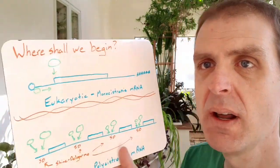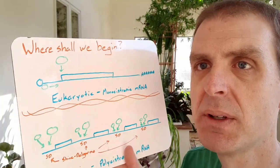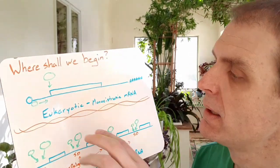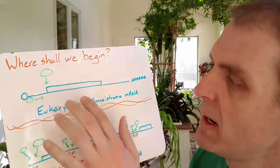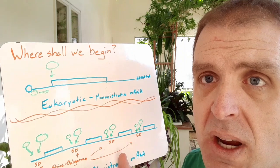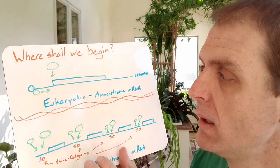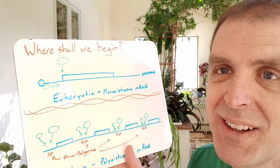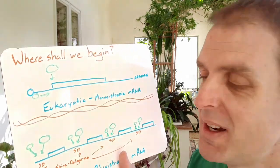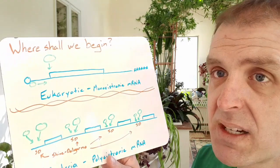So we're focusing on translation initiation and I have a couple of drawings to compare where translation initiation occurs on a typical eukaryotic mRNA. There's a lot of different types of eukaryotes so let's say human RNA and then bacteria.